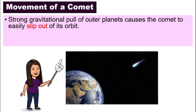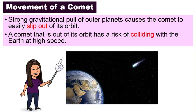Also, if there is a strong gravitational pull of outer planets, it can also cause the comet to slip out of its orbit. That is when we will get a little bit worried, because we will have a risk of a comet coming to collide with us at a very high speed, and that can cause some big destruction.